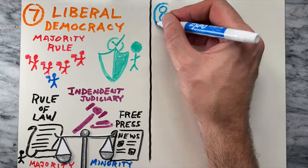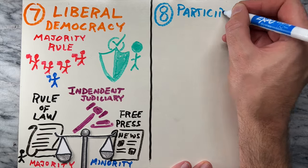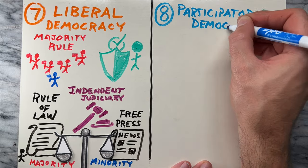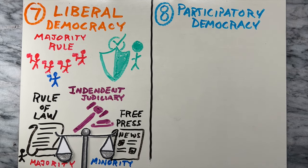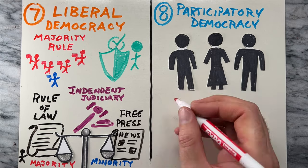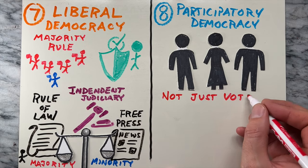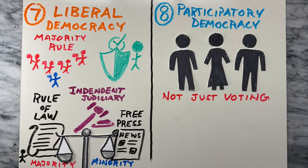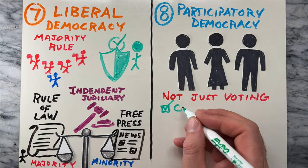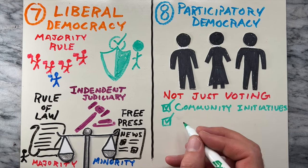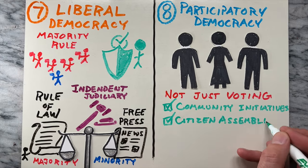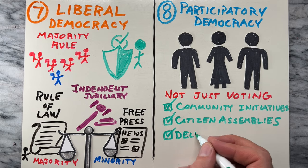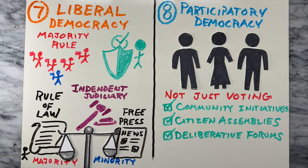Then there's participatory democracy. This form emphasizes the active participation of citizens in decision-making processes beyond just voting. It often involves community-based initiatives, citizen assemblies, and deliberative forums.